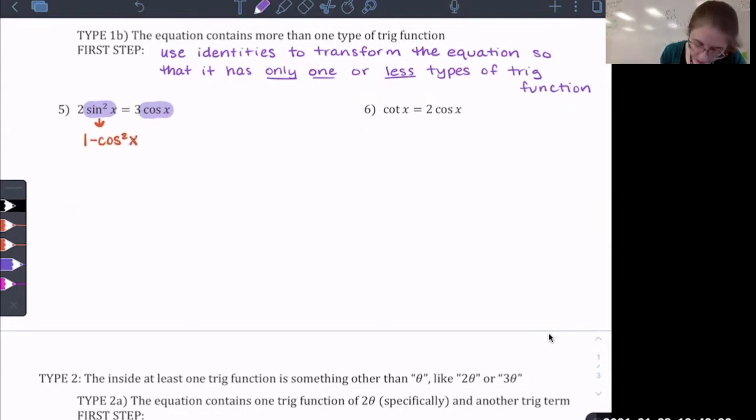So I would rewrite my equation as two parentheses, 1 minus cosine squared x equals 3 cosine x. And now once I have done that, and I have everything in terms of cosine, it shouldn't be too complicated to solve. The first thing I'm going to do is distribute to remove my parentheses. And I'm going to notice that because there is that squared term on the cosine, it's not going to be possible to isolate cosine because there's cosine squared and a cosine. So what I'm going to need to do is set this equation equal to zero and factor.